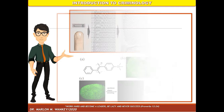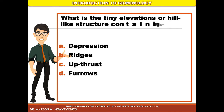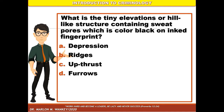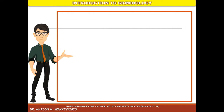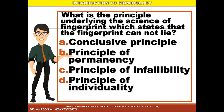Here are some review questions. What is the tiny elevation or hill-like structure containing sweat pores which appears black on an ink fingerprint? A. Depression; B. Ridges; C. Upthrust; D. Porous. Another question: What is the principle underlying the science of fingerprints which states that the fingerprint cannot lie? A. Conclusive principle; B. Principle of permanency; C. Principle of infallibility; D. Principle of individuality.